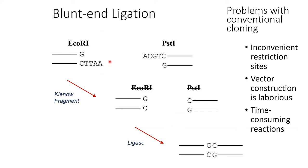Some vectors require blunt ends. To create blunt ends from sticky ends of the vector, we use the Klenow fragment, which provides restriction end nuclease activity that creates blunt ends on the sticky ends of the vector, through ligation with which we can insert into the vector.